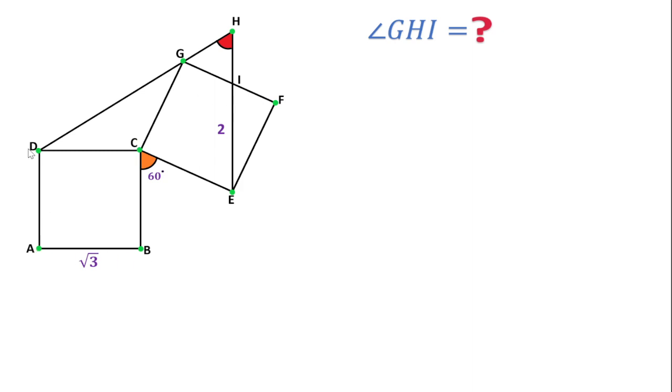First square is ABCD and second square is CEFG, both having side length root 3 units. This orange angle is 60 degrees and the line segment IE length is 2 units. Then we have to find this red angle, angle GHI.